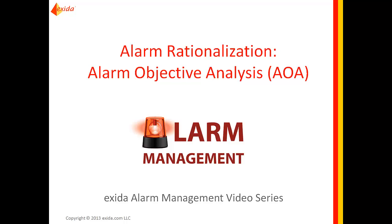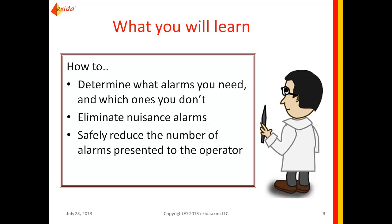In this session, you'll learn about a key part of the alarm rationalization process called Alarm Objective Analysis. Specifically, we'll see how Alarm Objective Analysis helps you to determine what alarms are valid and necessary versus which ones you don't need. You'll learn how to eliminate nuisance alarms and you'll see how to safely reduce the number of alarms that are presented to the operator.